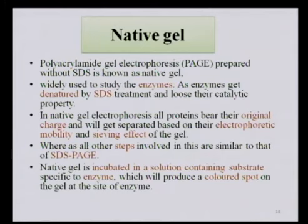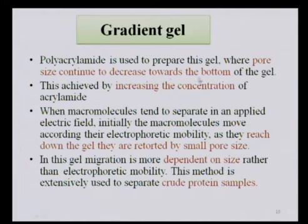The remaining steps of native PAGE are similar to SDS-PAGE. After separating an enzyme using native PAGE, the gel is soaked in a solution containing the specific substrate for that enzyme. The enzyme and substrate react, producing a colored spot on the gel which indicates the presence of enzyme in that particular region. This colored spot can be eluted and used for further studies.